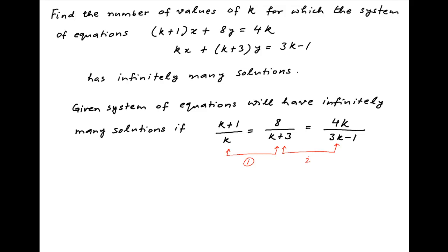Let's denote these equations by 1 and 2 respectively. Equation 1 implies that (k+1) times (k+3) is equal to 8k, or k² + 4k + 3 is equal to 8k.